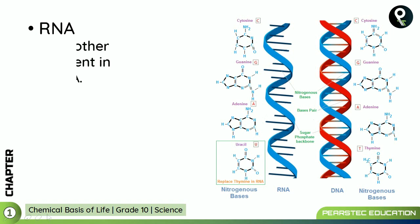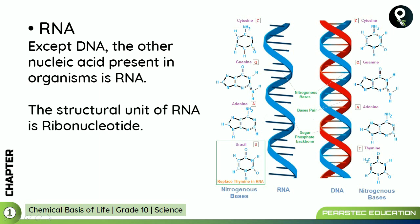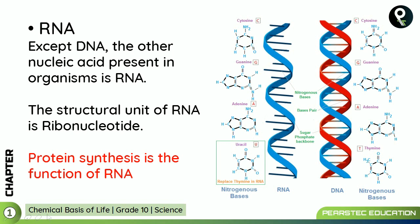What is RNA? Except DNA, the other nucleic acid present in organisms is RNA. The structural unit of RNA is ribonucleotide. Protein synthesis is the function of RNA — it's not about the genetical functions. Protein synthesis is the main function of RNA.